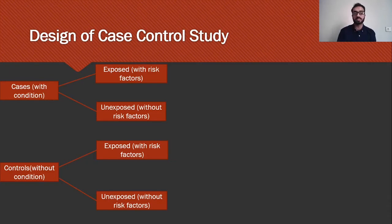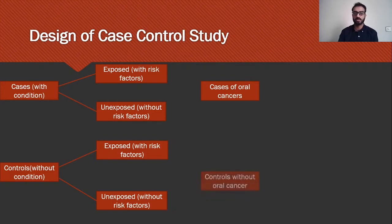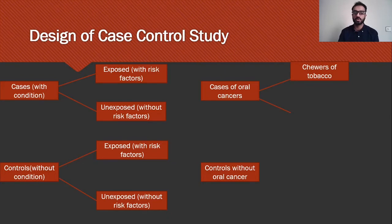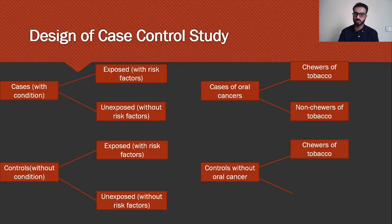To simplify this, let's take another example. We have oral cancer patients and we want to find out whether chewing tobacco had any role in the development of cancer. We take those with oral cancers as cases and those without oral cancer as controls, dividing them into subgroups based on a questionnaire: how many oral cancer patients have a history of chewing tobacco, and how many controls used to chew tobacco yet did not develop oral cancer, and how many did not chew tobacco and remained cancer-free.